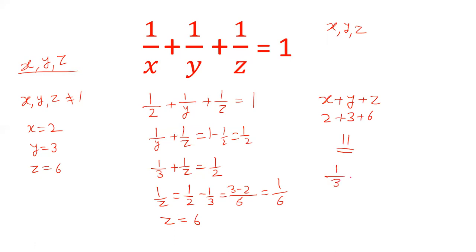We can take 1/3 + 1/3 + 1/3, and that will be 3/3, and that will be 1. So if x, y, and z are equal, they will be equal to 3, and their sum will be 3 + 3 + 3, that is 9.